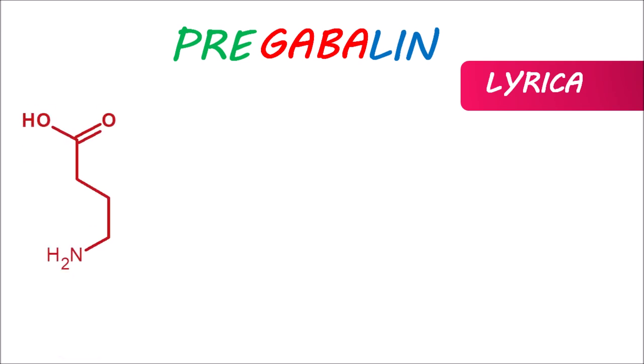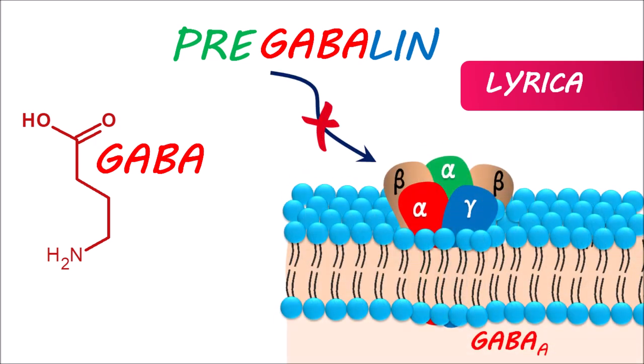Pregabalin is well known by its brand name Lyrica, and it is classified as an anti-epileptic drug (AED). It is structurally related to GABA, which is why we can observe the term GABA within its name. But interestingly, pregabalin does not act as GABA. Even though it is structurally related to GABA, it still doesn't bind to GABA receptors.